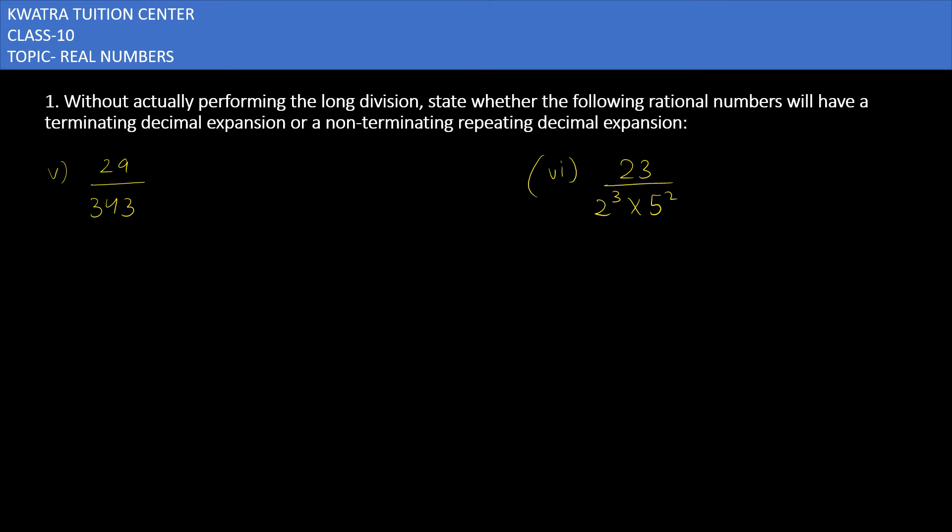Next thing, fifth part of this is 29 over 343. Now 343 is a cube, it is 7. So this means what will happen? I can write it as 29 over 7 cube. And if it is 7 cube, this means this is a non-terminating one. Because it should be 2 factor or 5, then it will be terminating. Non-terminating repeating it is.